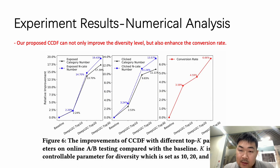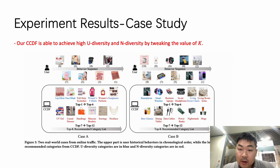The third is the experimental result. We have conducted AB tests in a real-world production environment with k equals 10, 20, and 30. With an increase in k, not only does the diversity improve, like the black line and the blue dashed line, but also there is a significant enhancement in conversion rate, the red line. We also present two real-world cases from online traffic in Figure 5. Both cases have verified the effectiveness of CCDF, which is able to achieve higher U-diversity and N-diversity by tweaking the value of k.